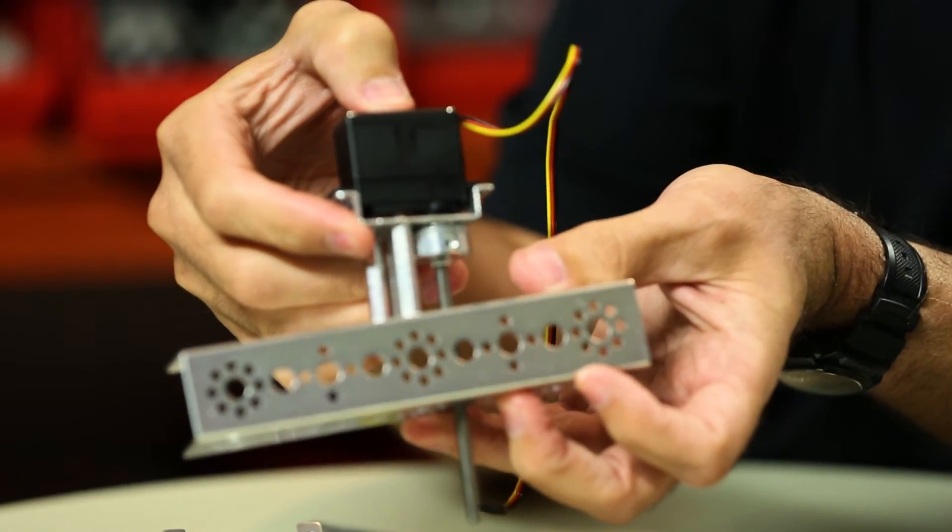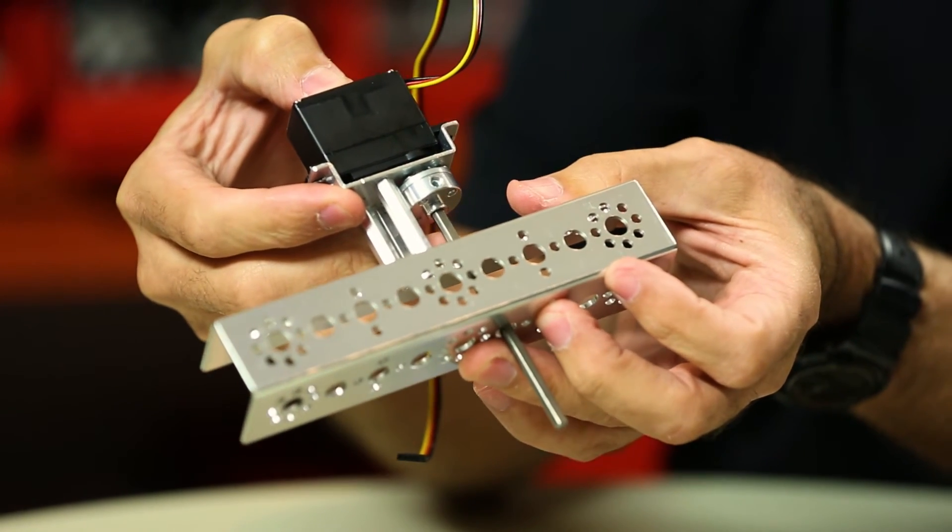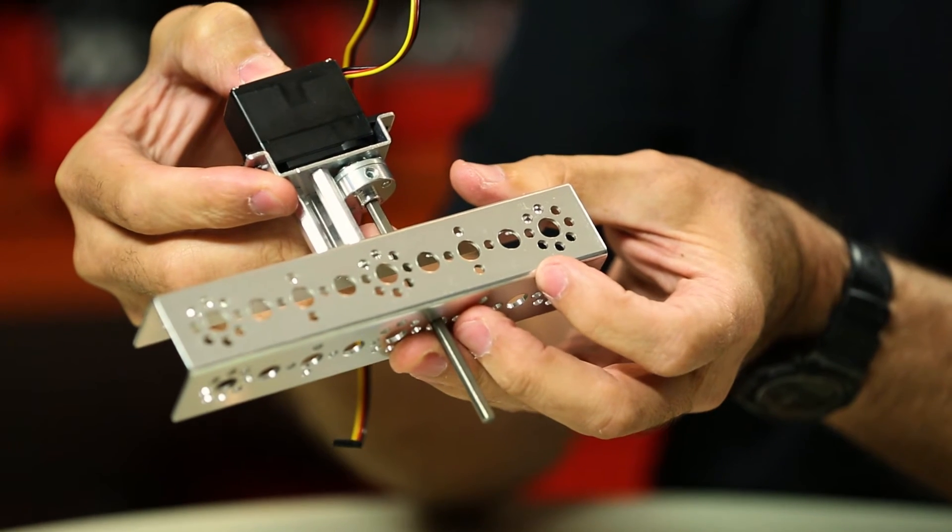My standoffs are going to hold the servo away from the channel but my axle is going to be actually supported on two sides by the channel.